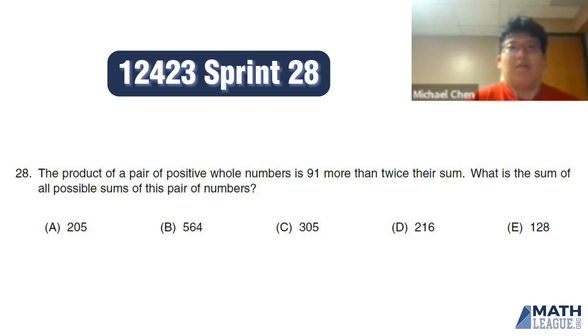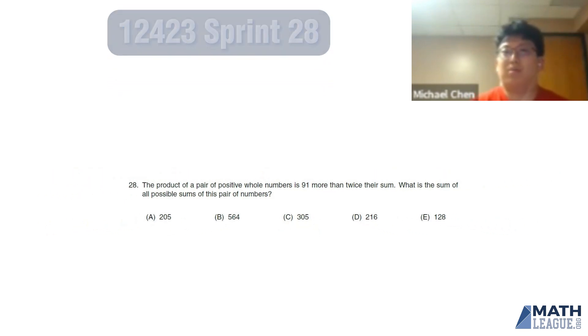And this question reads, the product of a pair of positive whole numbers is 91 more than twice their sum. What is the sum of all possible sums of this pair of numbers?